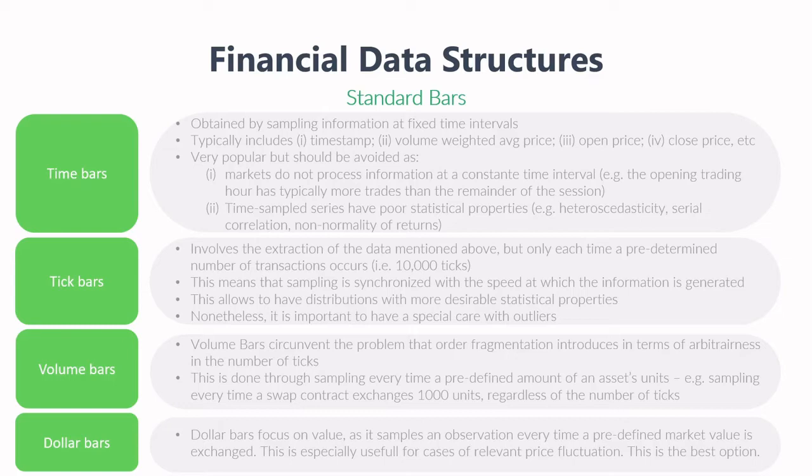Then we have tick bars. Tick bars involve the extraction of the data mentioned above, but only each time a predetermined number of transactions occurs — for instance, 1,000 ticks, 2,000 ticks, or 10,000 ticks. This means that sampling is synchronized with the speed at which information is generated, and therefore it allows a distribution with more desirable statistical properties. Nonetheless, it is important to have special care with outliers.